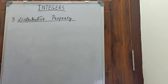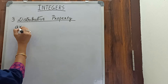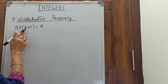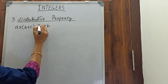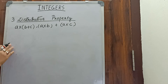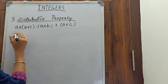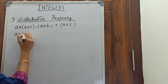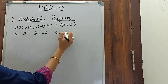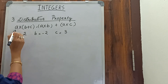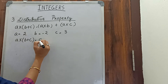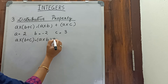The third topic is the distributive property. According to the distributive property, a into (b plus c) equals a into b plus a into c — that means a will multiply both b and c. We'll apply numbers to verify: let a equals 2, b equals minus 2, and c equals 3.